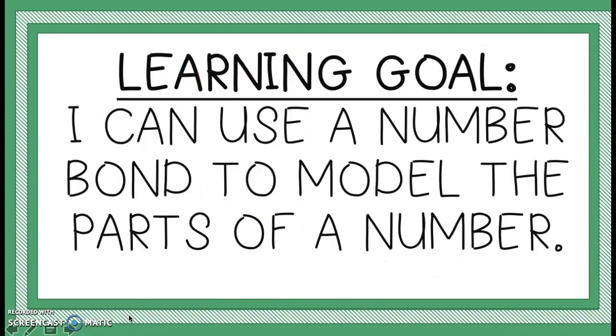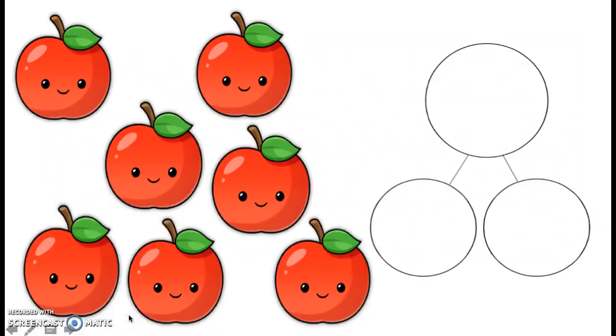Our learning goal for today says, I can use a number bond to model the parts of a number. That sounds pretty official and we have been doing an amazing job with it. It's not as tricky as it sounds. Okay, it's your turn. This is what I would like you to do, friends. I want you to go ahead and draw the empty number bond. Now, I'm going to circle a group of apples as part of the number.